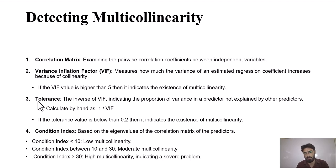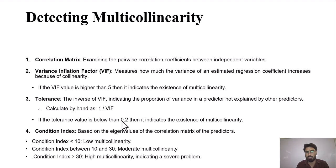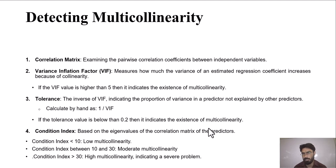The next method is tolerance. Tolerance and VIF are the reciprocal or inverse of each other. The formula of tolerance is 1 over VIF. If the tolerance value is below 0.2, it indicates the existence of multicollinearity. If tolerance is less than 0.2, there is an issue of multicollinearity; if it is greater than 0.2, there is no issue.